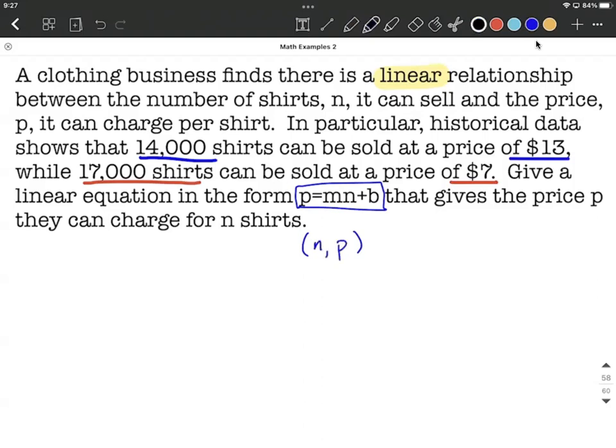So let's be careful as we set these up. N equals 14,000 goes along with a price of $13, and then our second was 17,000 goes along with a price of $7. This is going to help us get everything lined up to figure out what our slope M is and our Y-intercept B.